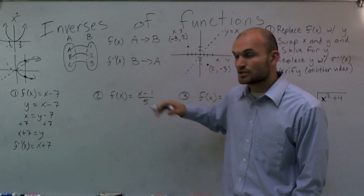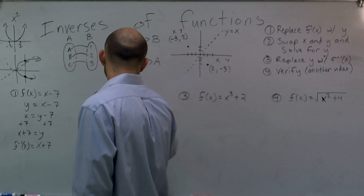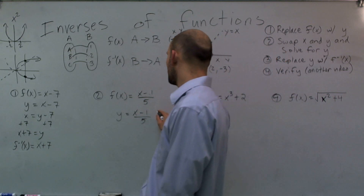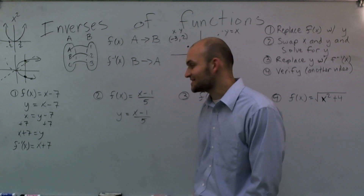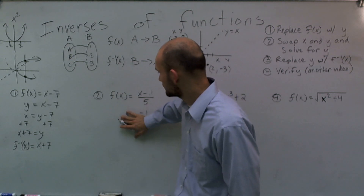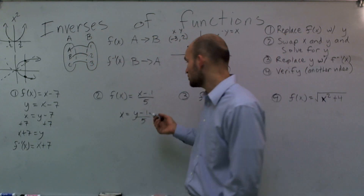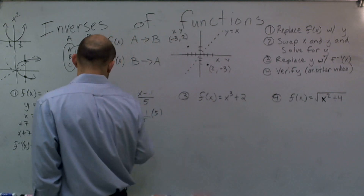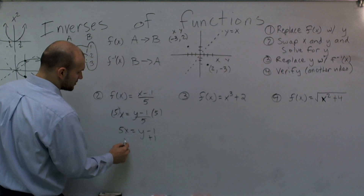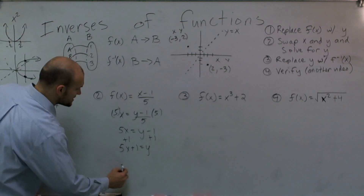For problem number two, we have a rational function: y = (x - 1) / 5. Whenever we have a number in the denominator, we're dividing by 5, so to undo that we multiply by 5. But first, we need to switch our x's and y's. After switching: x = (y - 1) / 5. Multiply both sides by 5, giving 5x = y - 1. Add 1 to both sides, leaving 5x + 1 = y. We've found the inverse, so use correct notation: f inverse of x equals 5x + 1.